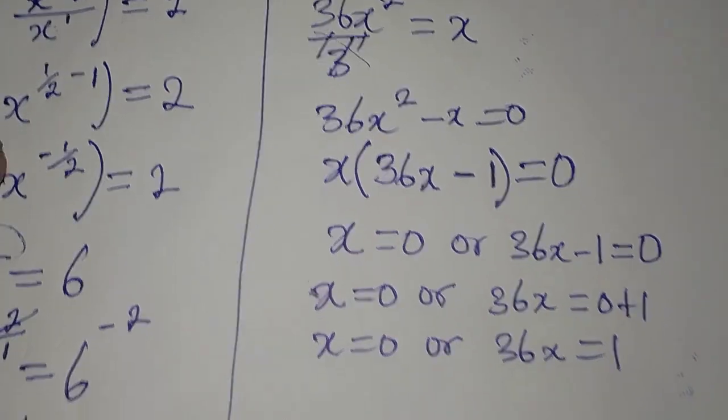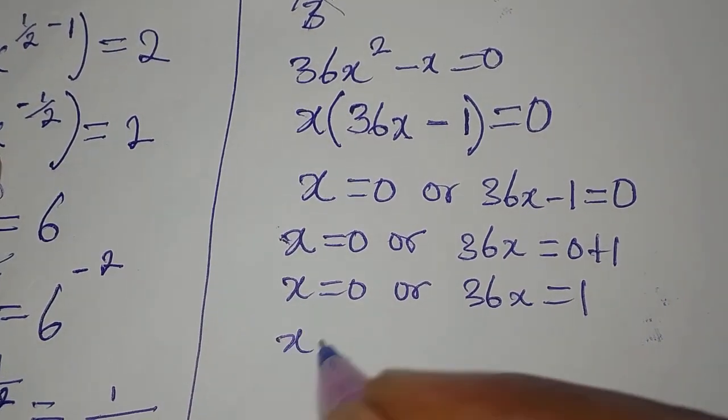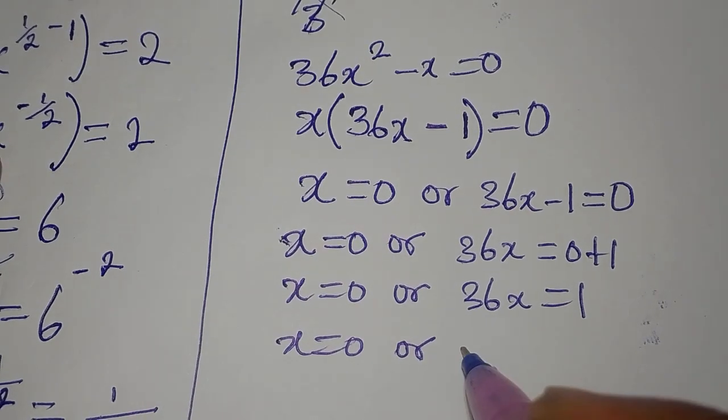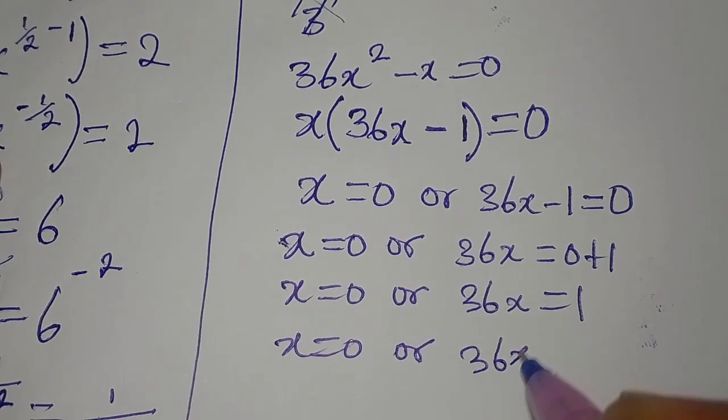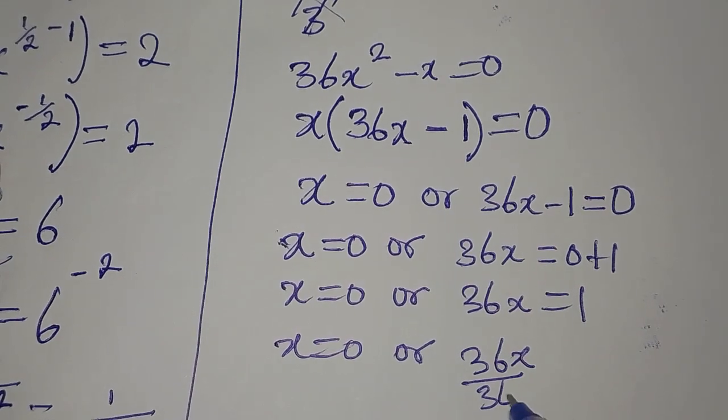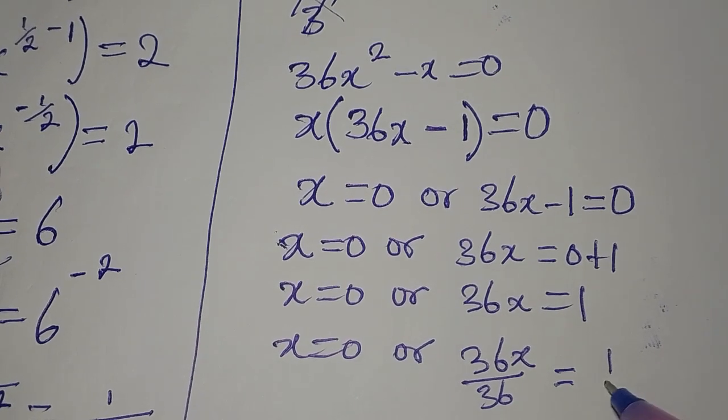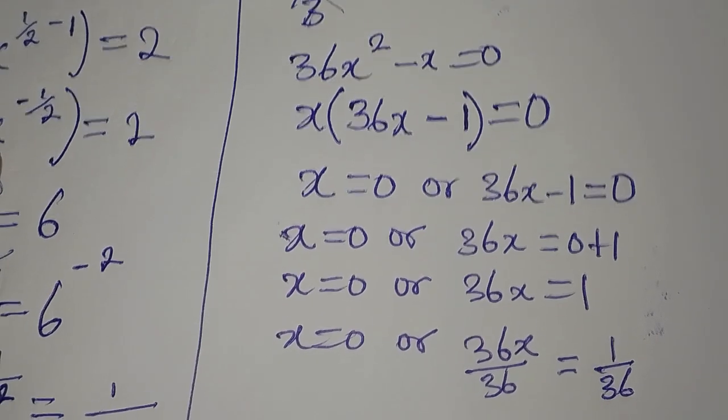Or 36x equals 1. So at this point, our x still remains 0 here. Or here now, 36 divided by 36 will be equal to 1 divided by 36.